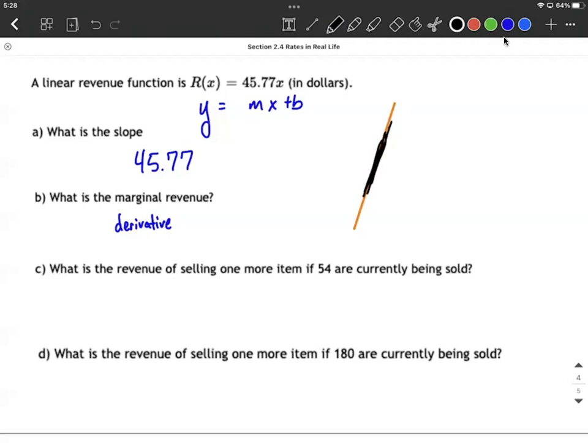Therefore, the marginal revenue is going to be the same thing as the slope of this line, of this linear function. We can answer that with 45.77 for the marginal revenue.